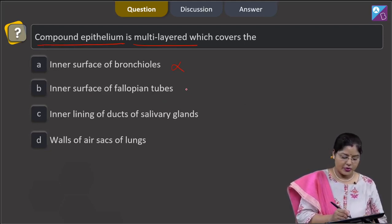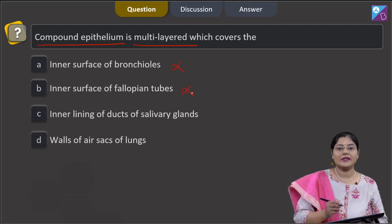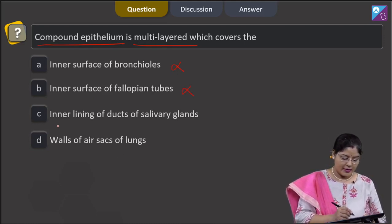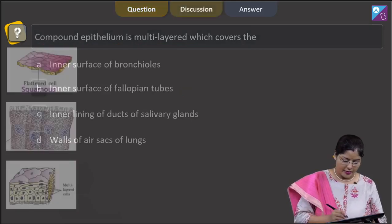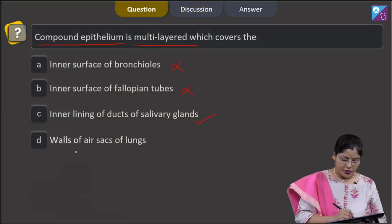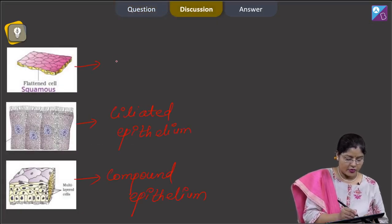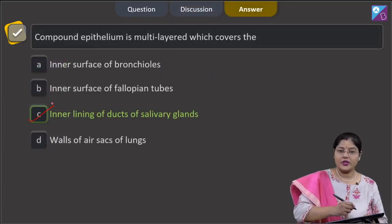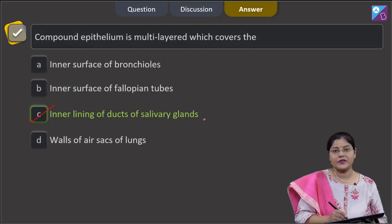Option B, inner surface of fallopian tubes, is also incorrect because it is lined by ciliated columnar epithelium. Option C, inner lining of ducts of salivary glands, is correct because compound epithelium — which is multi-layered — is present there. Option D, walls of alveoli of lungs, is incorrect because squamous epithelium is present in the walls of alveoli. So the correct answer is option C, inner lining of ducts of salivary glands.